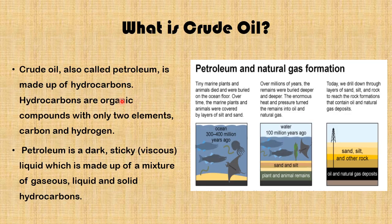What is crude oil or petroleum? Crude oil, also called petroleum, is made up of hydrocarbons. Hydrocarbons are organic compounds with only two elements: carbon and hydrogen. Petroleum or crude oil is a dark, sticky, viscous liquid which is made up of a mixture of gaseous, liquid, and solid hydrocarbons.